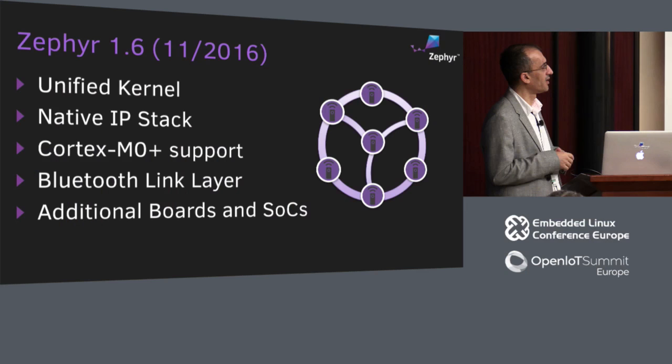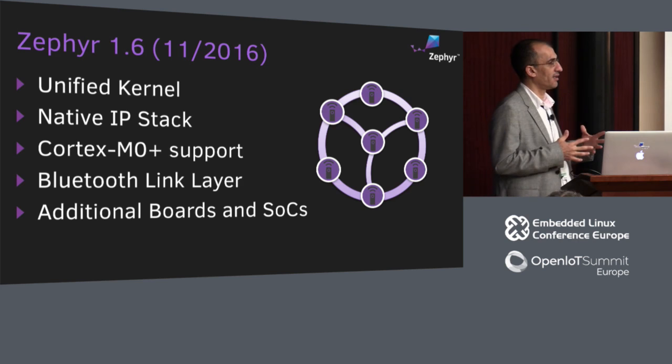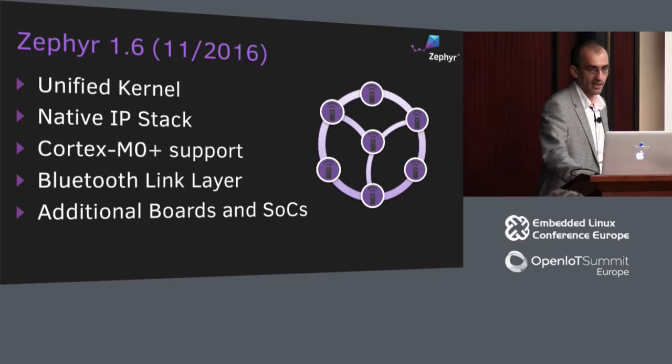Bluetooth link layer is another big change started this summer, contributed by Nordic. It's already in master and will be in 1.6. There will be a lot of boards and SoCs added over time. There is a lot of activity on the ARM architecture front — boards from STMicro, Atmel from ARM, from Linaro, and the reference board presented at Linaro Connect two weeks ago. With 1.6 we will have a large set of SoCs and features available.